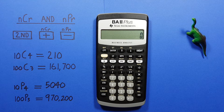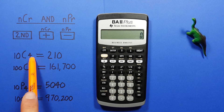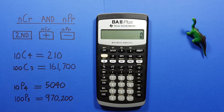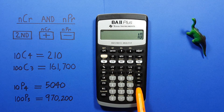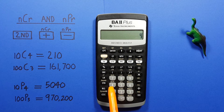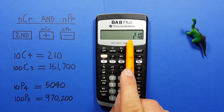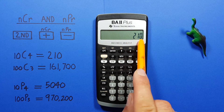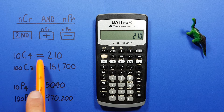We'll start with combinations. Let's say we were given 10 choose 4 combinations and want to solve that. You start by entering the 10, then second function, and then the plus key, which has a second function of combination, then your 4, and press equals. And it'll give you the result of 210. So 10 choose 4 combinations is equal to 210.